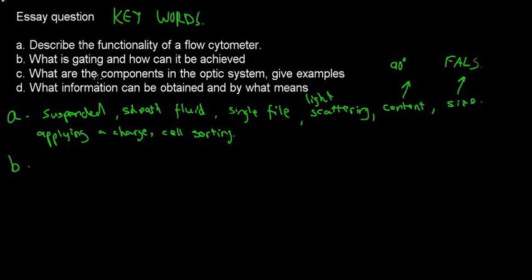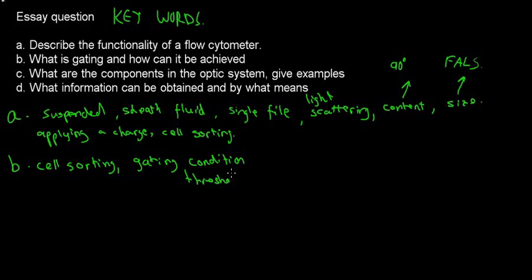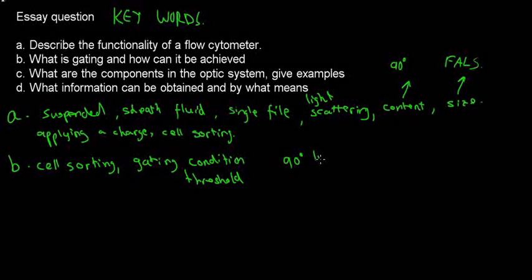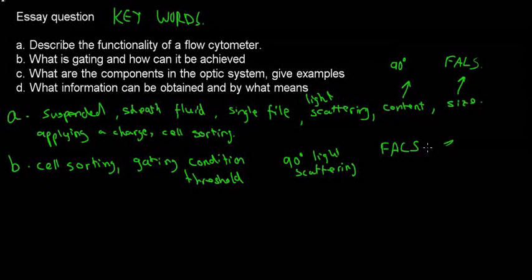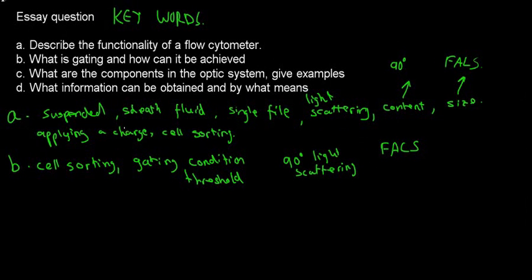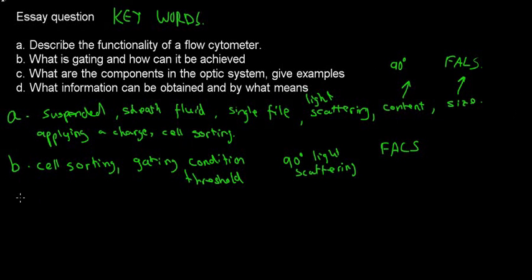Question B: What is gating and how can it be achieved? Gating is basically the cell sorting mechanism. The gating condition, or gating threshold, is a specific parameter that may be examined via the 90-degree light scattering — this is really the fluorescence activated cell sorting. How it can be achieved: we can induce an electric charge after we've obtained information about the cell, and then it will be attracted to its complementary charged plate and collected at the bottom.